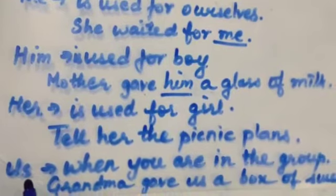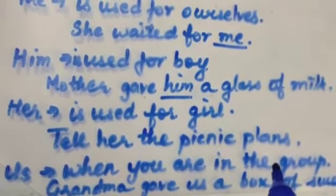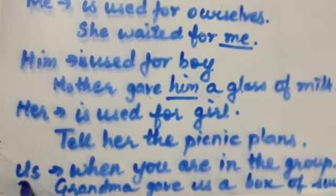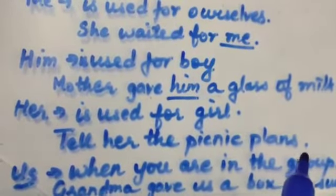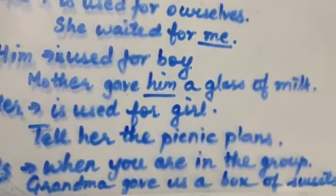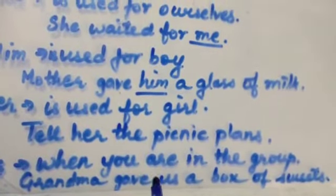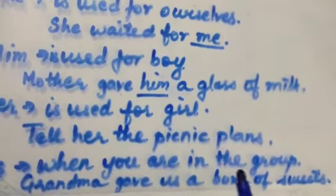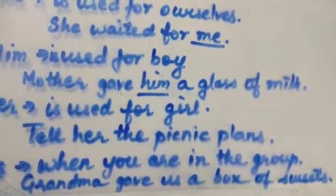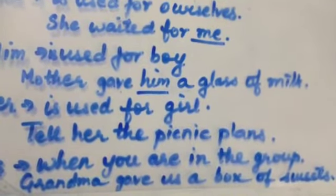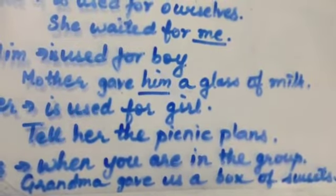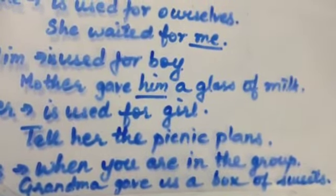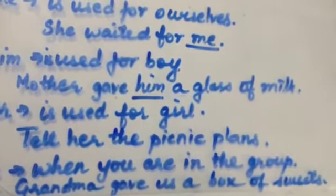Now the next one is us. When you are in a group, we use us. Us is used only when you are also included in that group. For example: grandma gave us a box of sweets. That means there are three or four children and you are also included in that group, so grandma gave you and the other children a box of sweets.